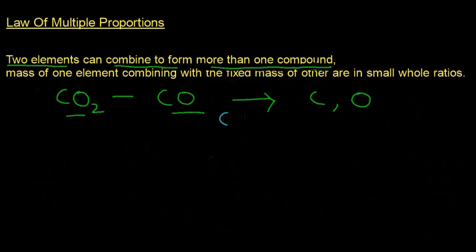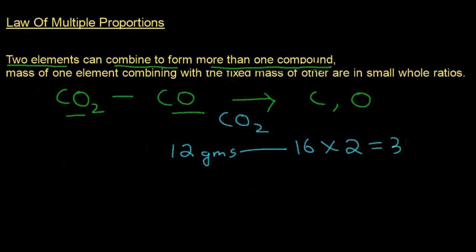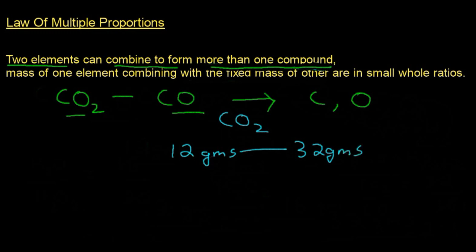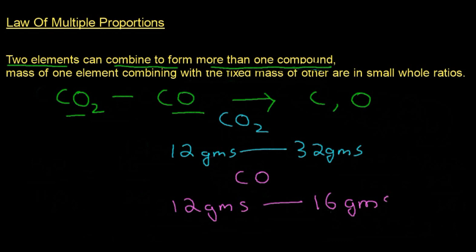Let us begin with carbon dioxide CO₂. The atomic mass of carbon is 12 and the atomic mass of oxygen is 16, but there are two atoms of oxygen, so it would be 16 × 2 = 32 grams. So to react with 12 grams of carbon we need 32 grams of oxygen. For carbon monoxide CO, the atomic mass of carbon is 12 grams and the atomic mass of oxygen is 16 × 1 = 16 grams. So to react with 12 grams of carbon we need 16 grams of oxygen.